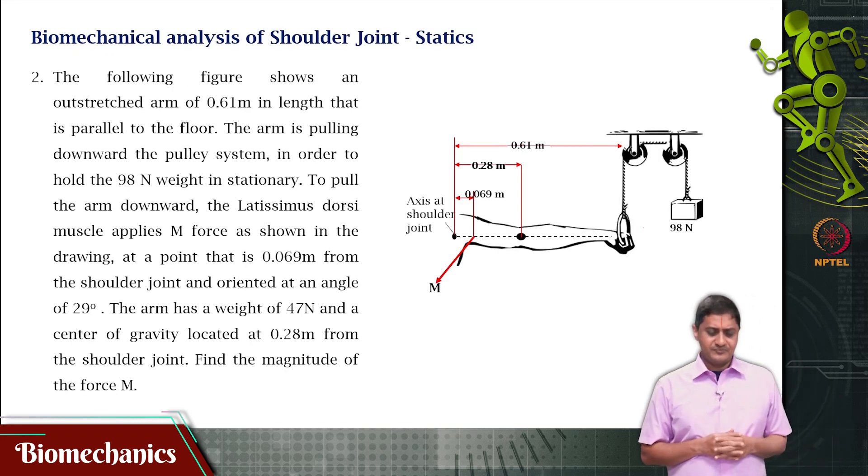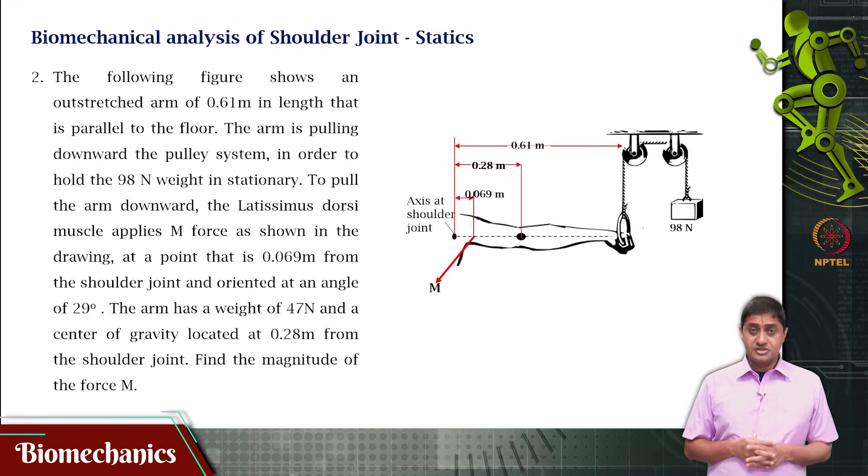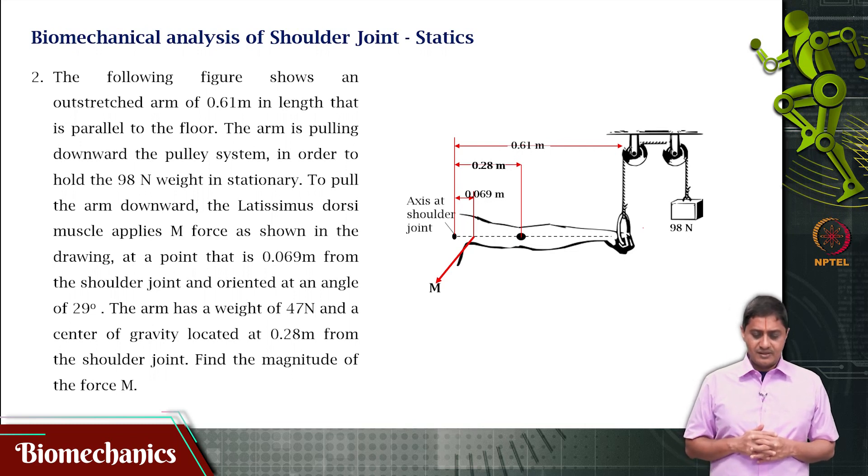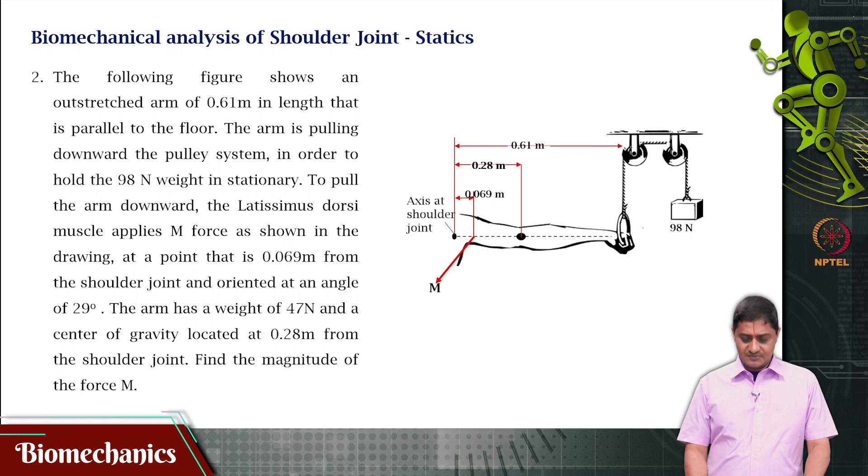Here is the problem. The figure shows an outstretched arm of length 0.61 meters that is parallel to the floor horizontal. The arm is pulling downward the pulley system in order to hold the 98 Newton weight in stationary position.